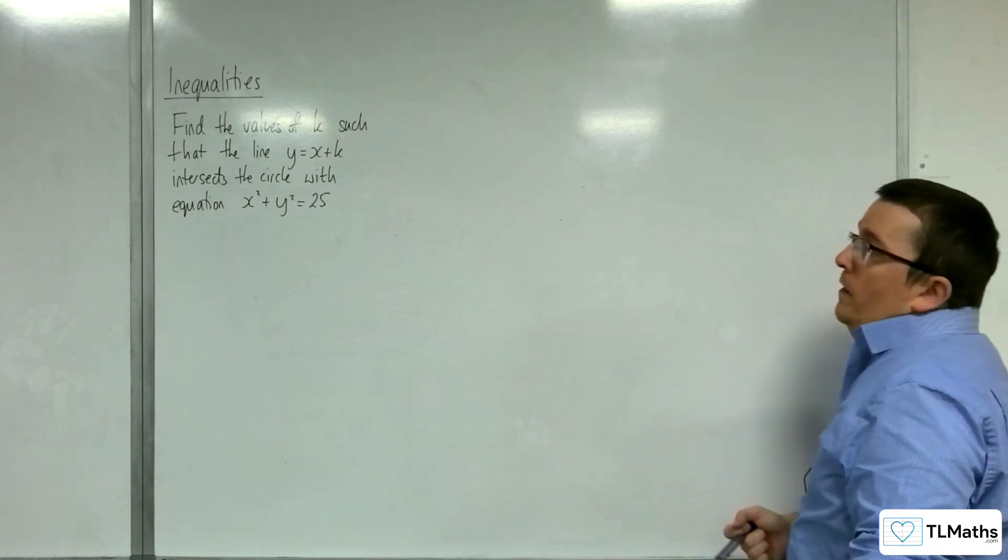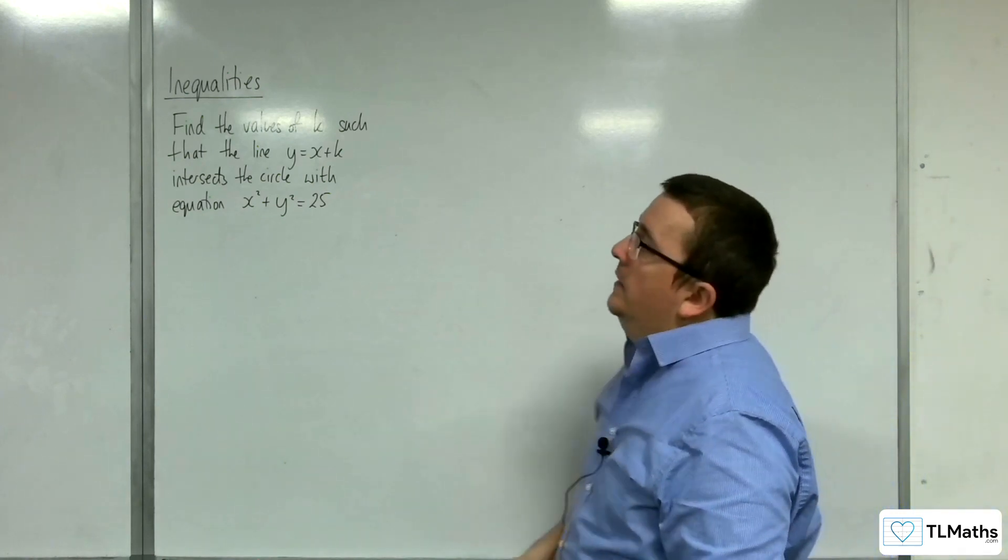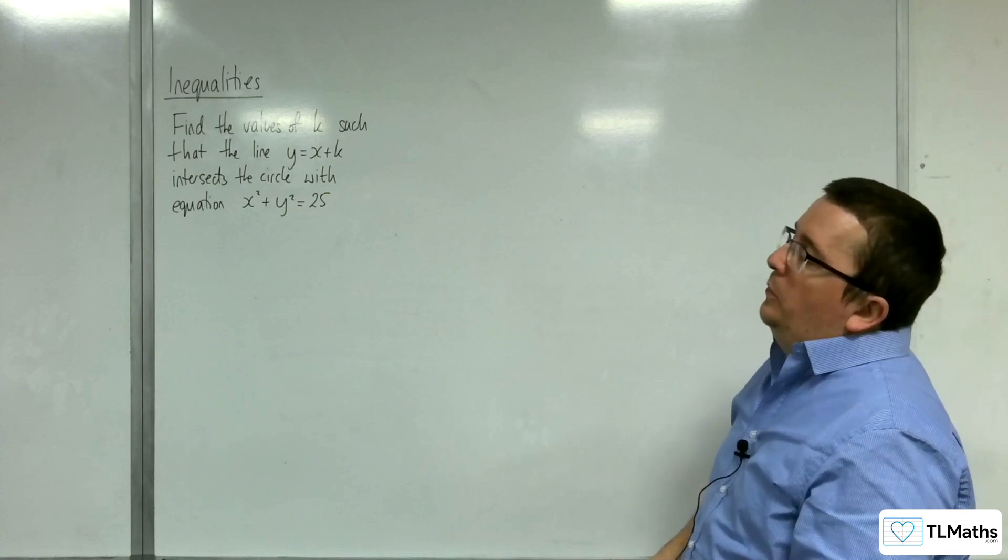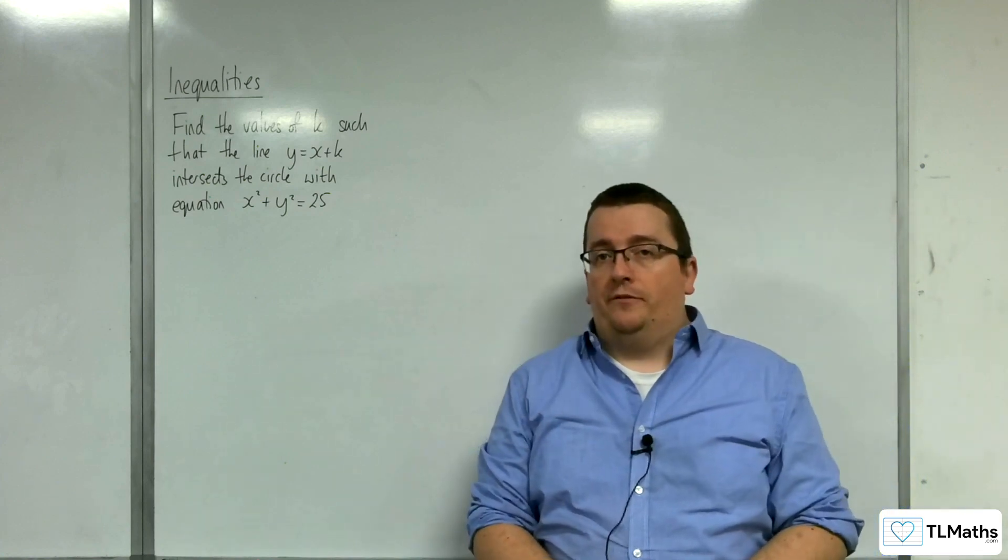In this video we're going to look at this problem. Find the values of k such that the line y equals x plus k intersects the circle with equation x squared plus y squared equals 25.